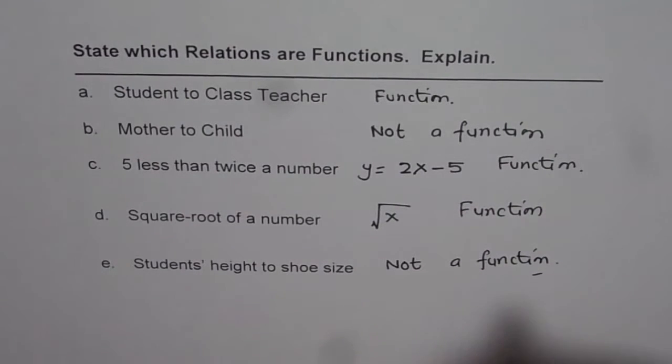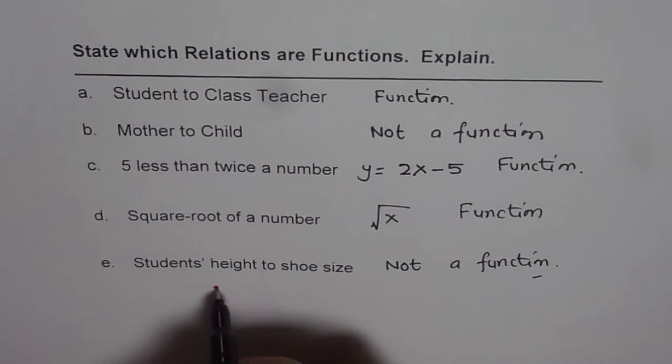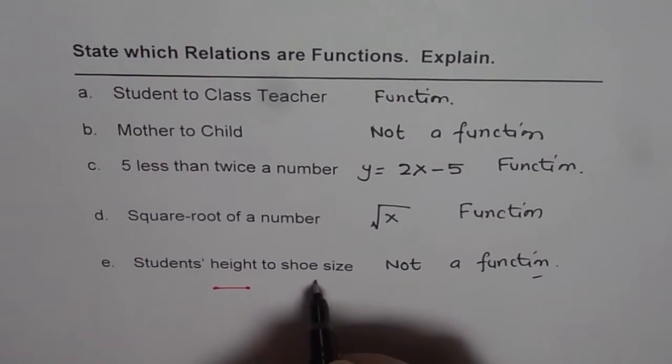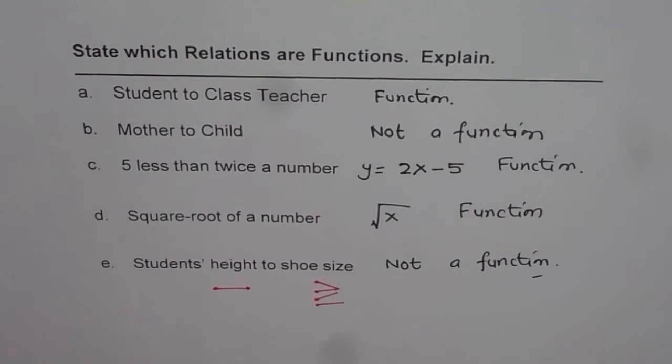So the basic criteria for function is that to every input there has to be an association of unique output. So the relation is a function if we have one on one relation or if we have many to one.